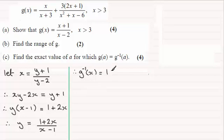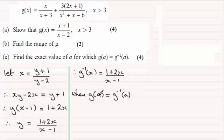So now I'm in a position to start to form this equation here. So if I was to say when g(a) equals the inverse of g(a), then substituting a into here we've got (a+1)/(a-2), so therefore (a+1)/(a-2) equals, and then substituting a into here we've got (1+2a)/(a-1).